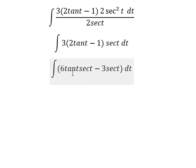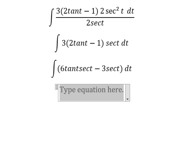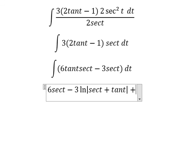The integration of tan t secant t and secant t. The integration of tan t secant t becomes secant t. The integration of secant t gives ln of the absolute value of secant t plus tan t, and we add the constant C.